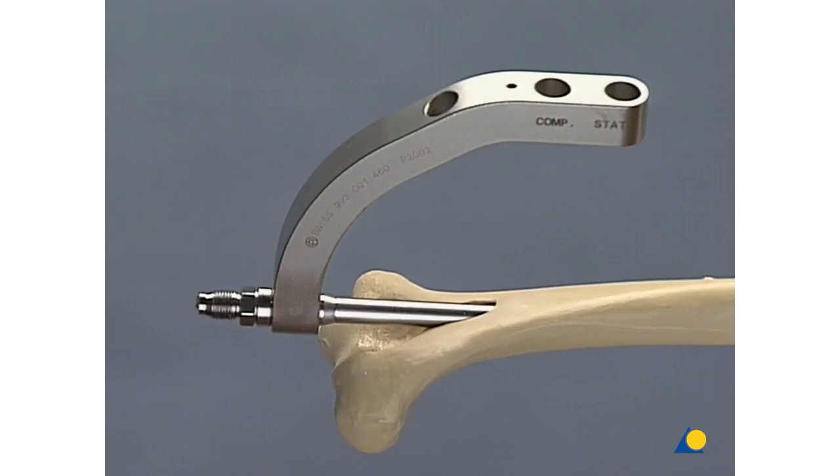To check the depth of the nail, insert a 3.2 millimeter drill bit through the hole in the insertion handle.